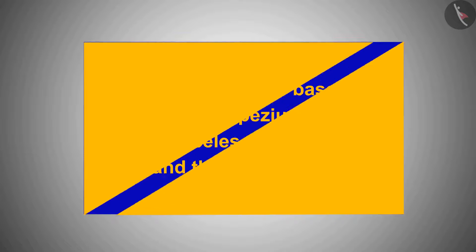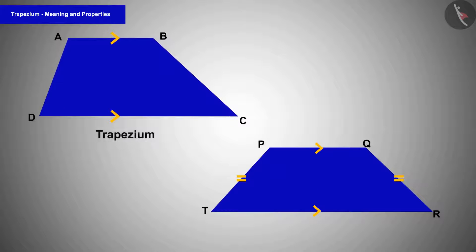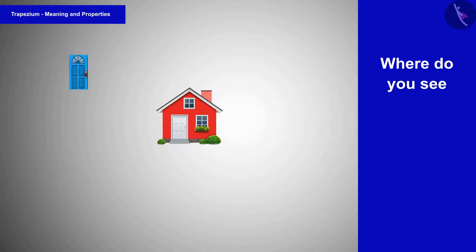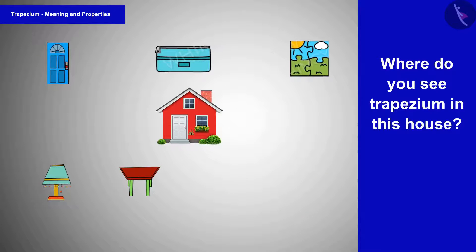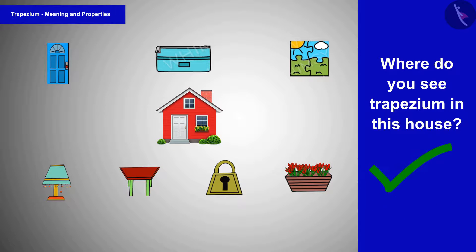Welcome to this video. Today we will see examples based on trapezium, isosceles trapezium and their properties. Let us play a game: where do you see trapezium in this house? Pause the video and try. You can see trapezium in the table, table lamp, lock and pot.